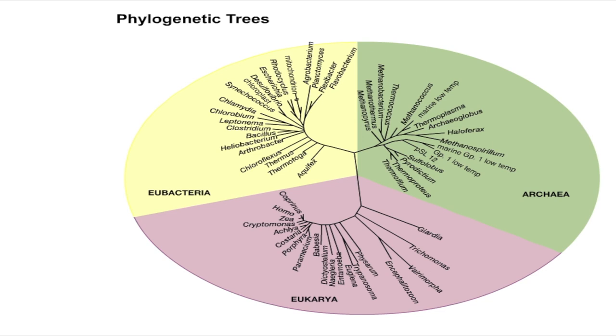Phylogenetic trees can also be used to graphically represent the divergence of specific genes within related organisms over time. These phylogenetic trees are known as gene trees.